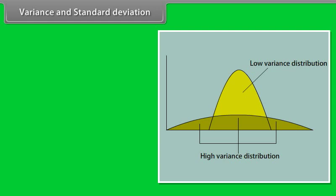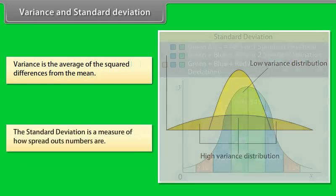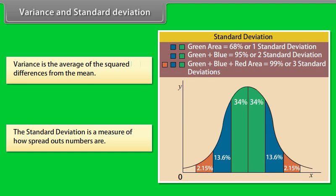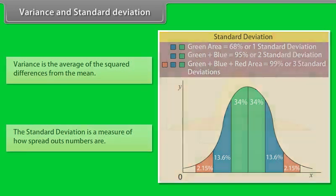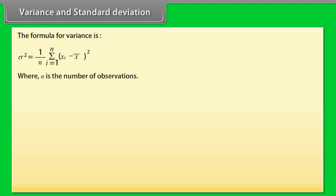Variance is the average of the squared differences from the mean. The standard deviation is a measure of how spread out numbers are. The formula for variance is: summation from i=1 to N of (Xᵢ − X̄)² divided by N, where N is the number of observations. The formula for standard deviation is the square root of variance.